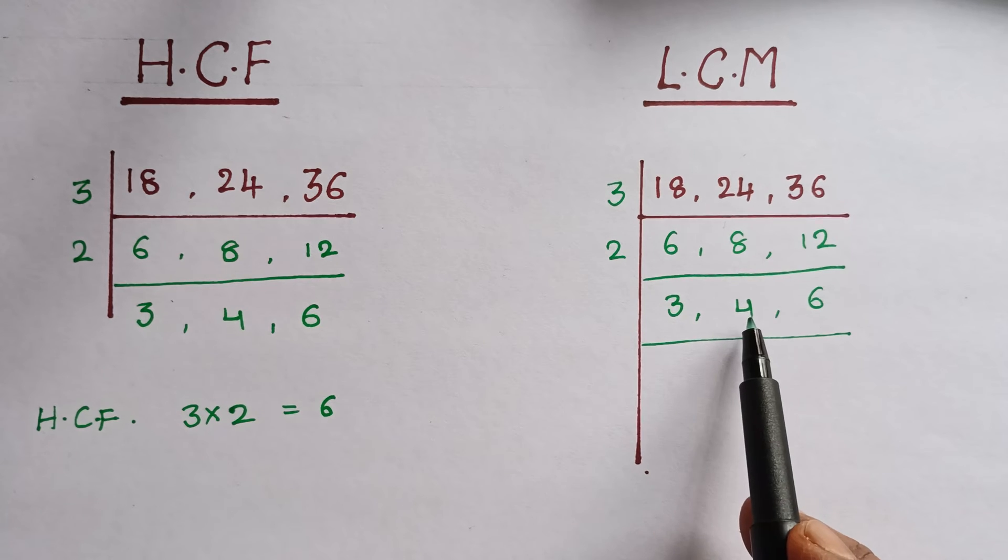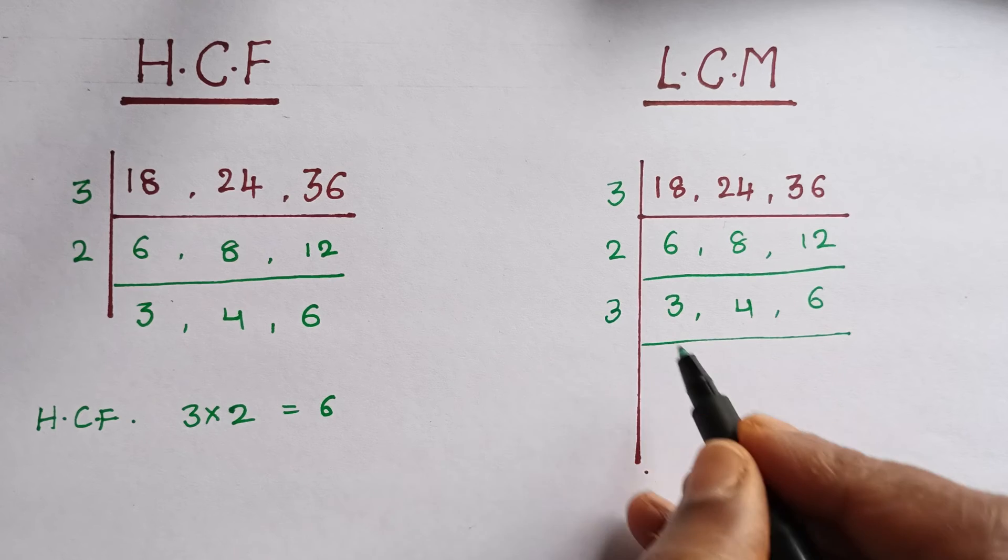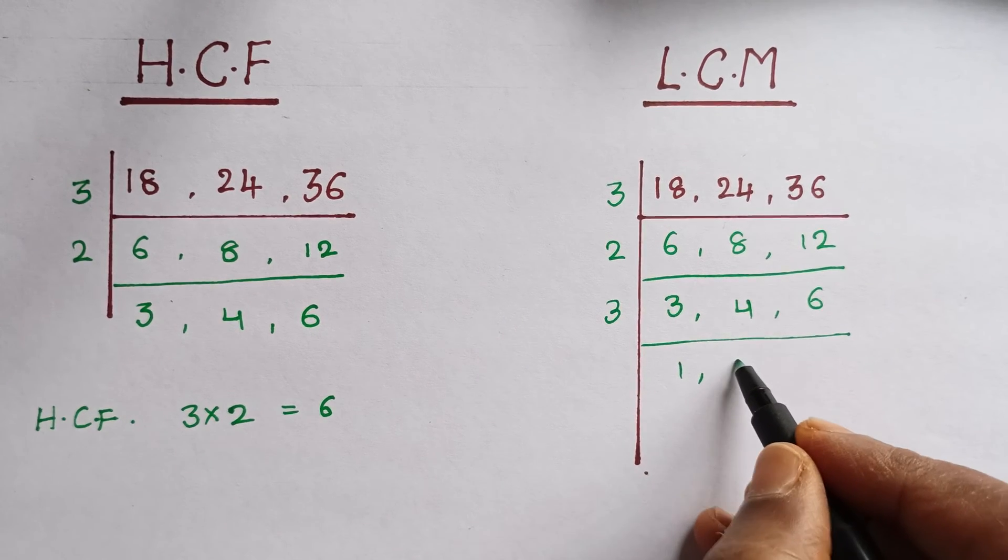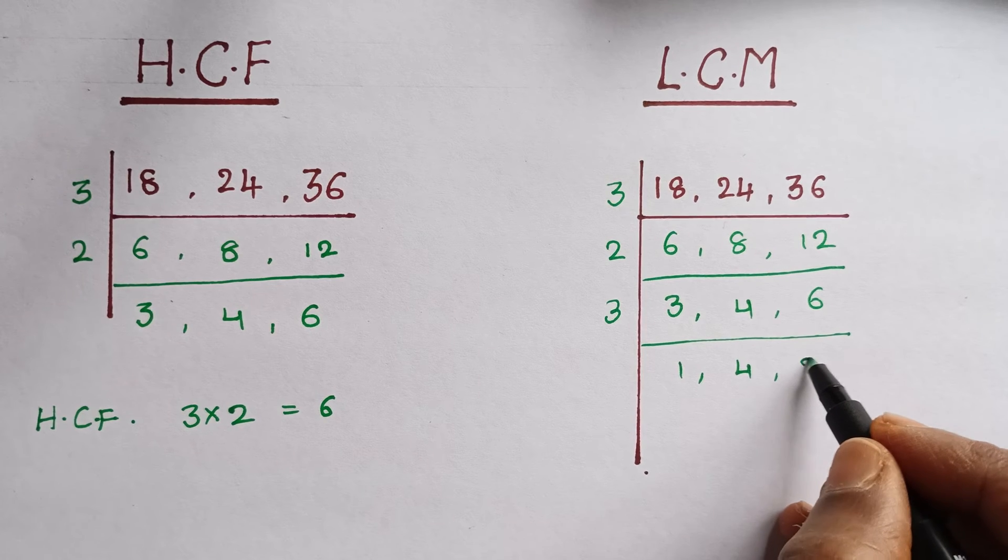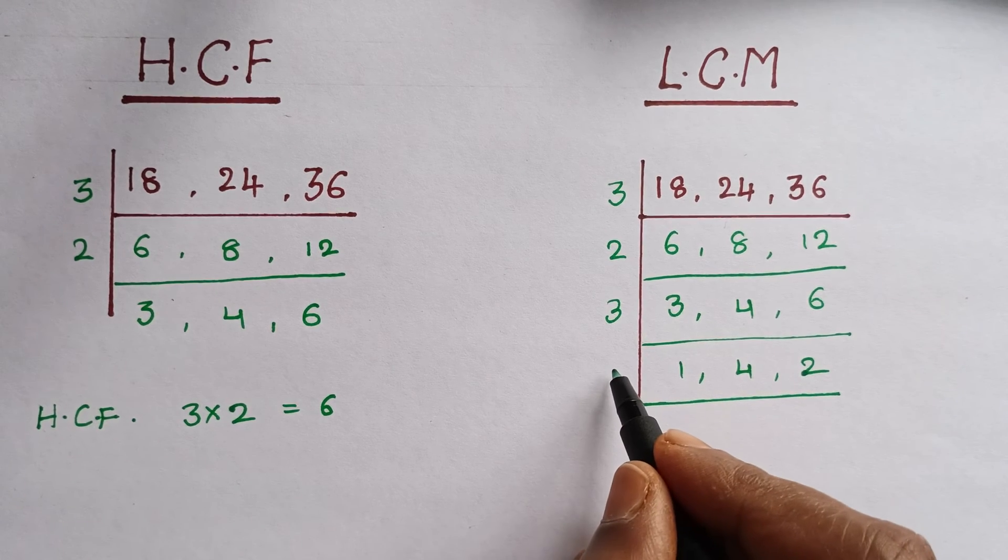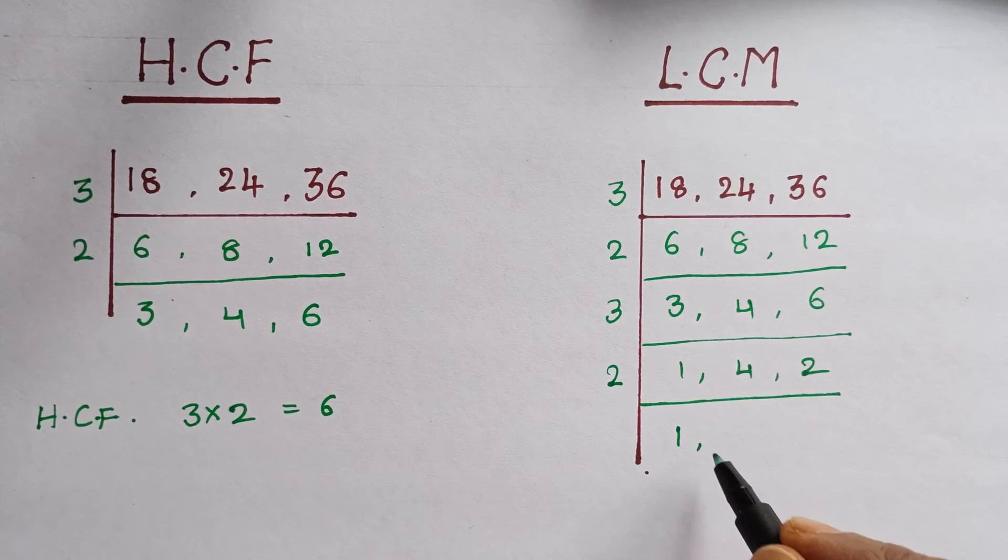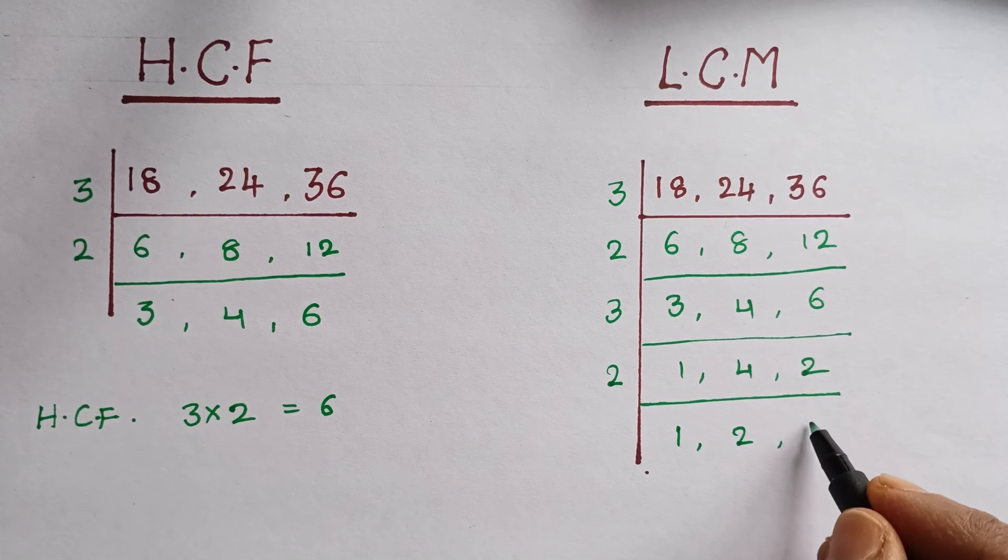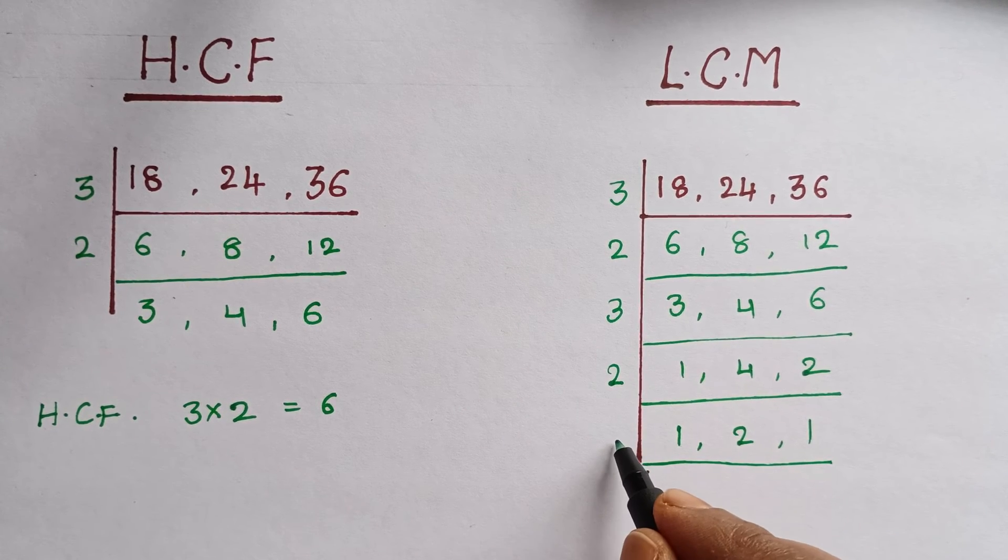Now 2 times 3 is 6, 2 times 4 is 8, and 2 times 6 is 12. Again we can continue with the 3 table: 3 times 1 is 3, 4 as it is, and 3 times 2 is 6. Now again we can do 2: 2 times 1 is 2, 2 times 2 is 4, and 2 times 1 is 2. Last and final, until we get 1 we should do it.